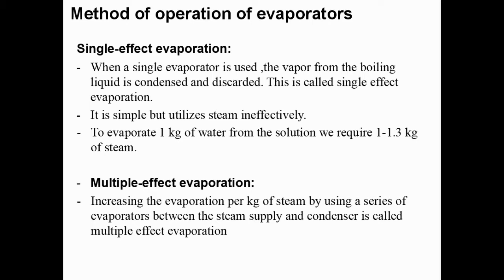To improve efficiency, we use multiple effect evaporation, which increases the evaporation per kilogram of steam by using a series of evaporators. In this case, the vapor coming from the top of the first evaporator is used as steam for the second evaporator, and the vapor from the second evaporator is used as steam for the third evaporator. With this method, we can save energy.